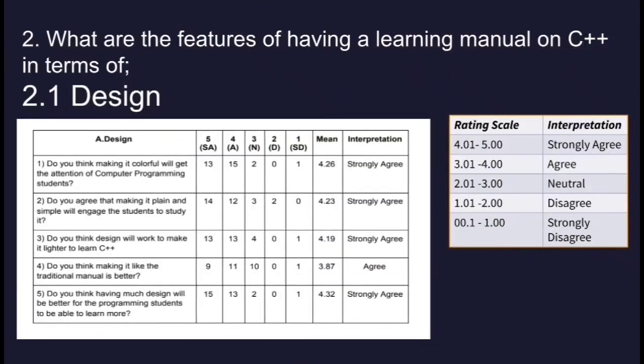Statement of the Problem No. 2: What are the features of having a learning manual on C++ in terms of design? After gathering and tallying the results, we solved it using the formula of weighted mean. The final answers are: No. 1 is 4.26 — strongly agree; No. 2 is 4.23 — strongly agree; No. 3 is 4.19 — strongly agree; No. 4 is 3.87 — agree; No. 5 is 4.32 — strongly agree. Design is needed because 4 out of 5 questions received a strongly agree interpretation and the other one is agree.